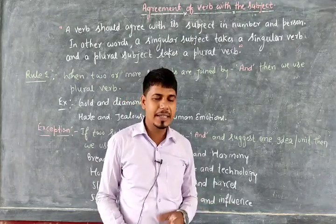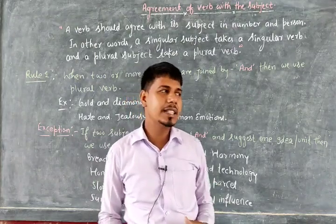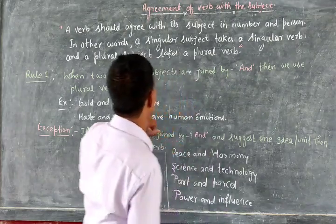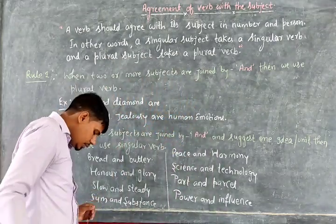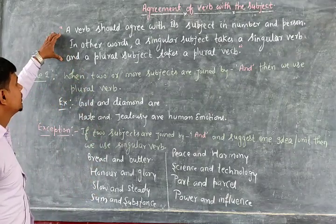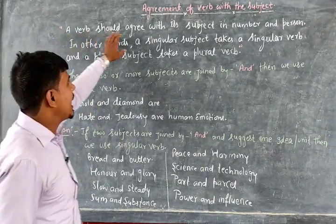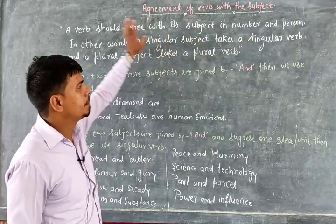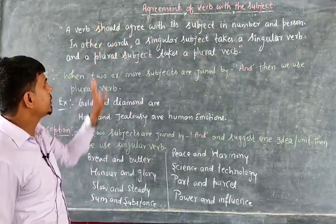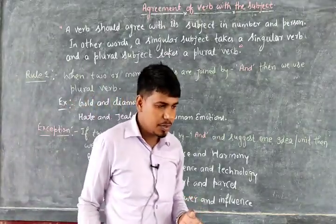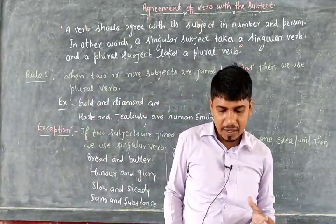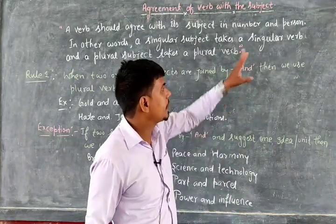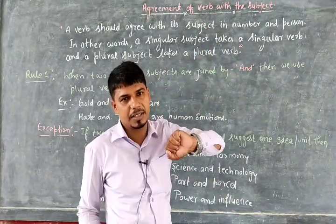So, very first, let's see what is subject-verb agreement — what is the definition? A verb should agree with its subject in number and person. It means a verb should be according to the number and person of the subject.